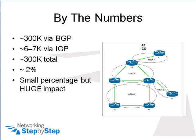Let's assume the full internet table is around 300,000 routes — it may be a little more or a little less, but let's say 300,000 is the total number of internet routes available today. If you take that number of routes and consider the largest OSPF network, which is around 6,000 to 7,000 routes, then the total number of OSPF routes plus BGP routes still gives you approximately 300,000 routes.